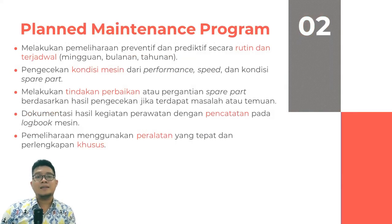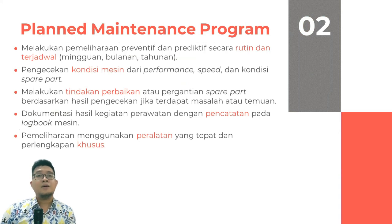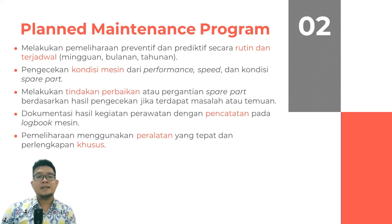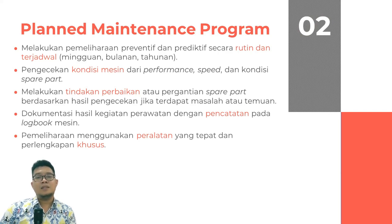Pilar yang kedua adalah Planned Maintenance Program. Pada pilar kedua ini melakukan pemeliharaan yang bersifat preventif dan predictive secara rutin dan terjadwal. Ini lebih ke ranahnya seorang teknisi mesin. Dia harus memeriksa mesin-mesin di produksi secara terjadwal, baik mingguan, bulanan, bahkan sampai tahunan. Dilakukan pengecekan kondisi mesin dari segi performance, speed, maupun kondisi spare part pada mesin tersebut. Pada Planned Maintenance Program, dilakukan tindakan perbaikan atau penggantian spare part berdasarkan hasil pengecekan jika terdapat masalah ataupun temuan. Hasil dari preventif ini didokumentasikan dengan pencatatan pada logbook mesin. Pilar yang kedua ini lebih ditekankan bagaimana untuk melakukan perawatan sebelum dilakukan penggunaan mesin di produksi.